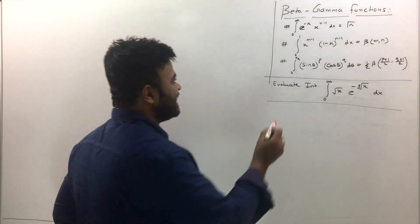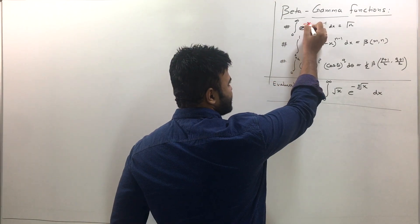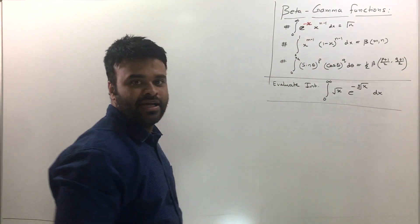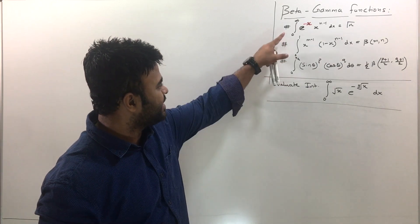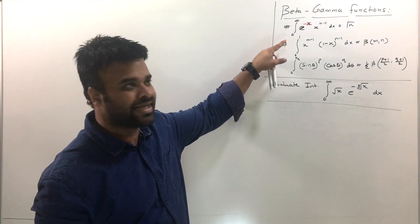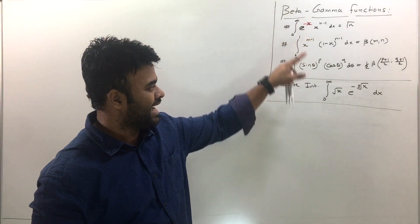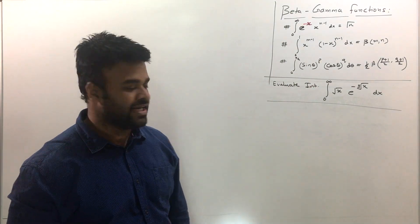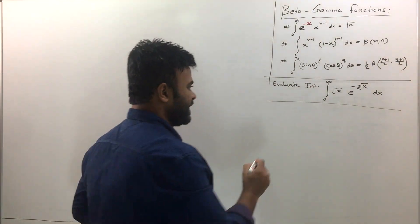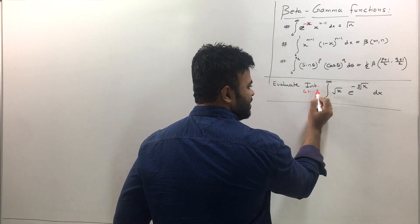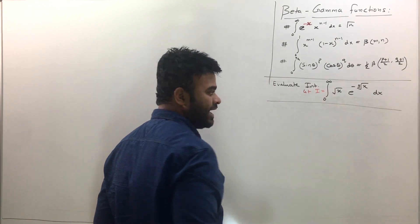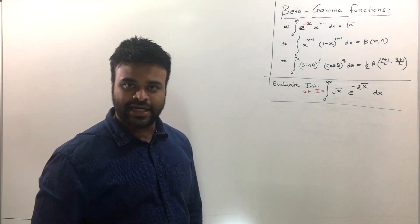But supposing if I have e raised to minus x, then I can very well call it a gamma function and solve this. Now for this question, what I can do is, first let me begin, let me assume this function, this integral as i. And when it comes to an integration, the integrals are always solved using substitution method.